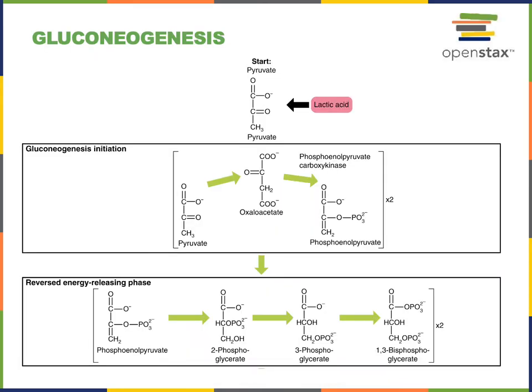Gluconeogenesis is the synthesis of glucose from non-carbohydrates. We need to maintain glucose levels in the blood in order to support aerobic cellular respiration of tissues throughout the body, in order to maintain ATP levels in cells to support life. And so if there's not sufficient carbohydrate intake from the diet, one of the ways to produce glucose is to start with non-carbohydrates such as lactic acid.